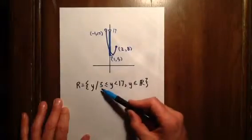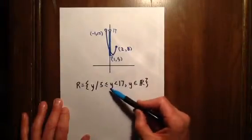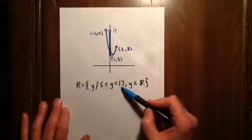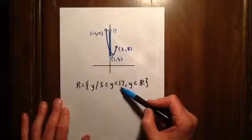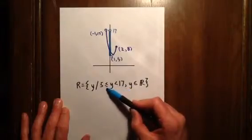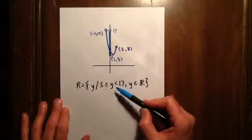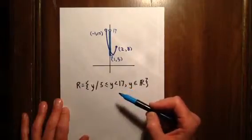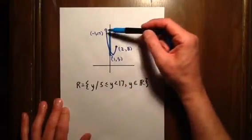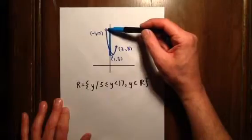So we state our range: 5 less than y less than 17. And then our job becomes to determine whether these numbers, whether we should have less than or equal to signs or just less than signs. This is how we're going to figure it out. We ask ourselves, does the number 17 actually appear in the range?